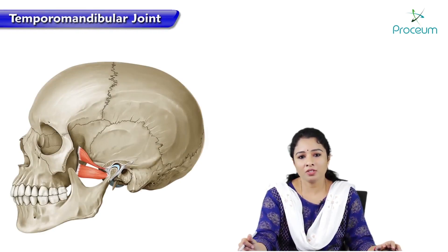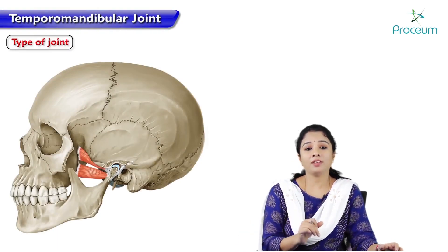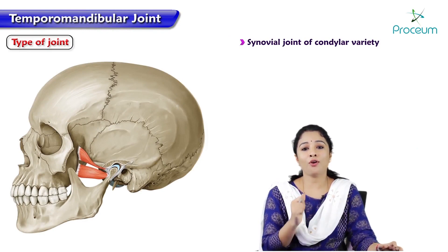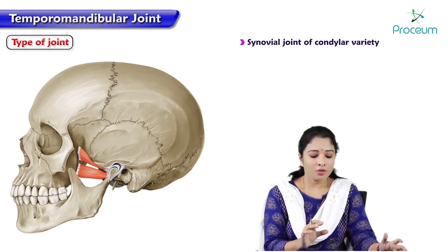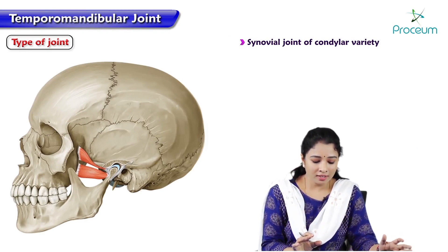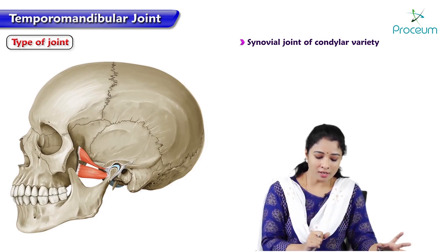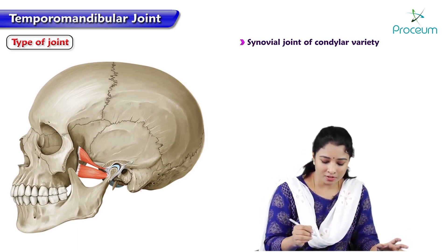The temporomandibular joint is a synovial joint of condylar variety. Here you are seeing the lateral view of the skull showing the temporomandibular joint.